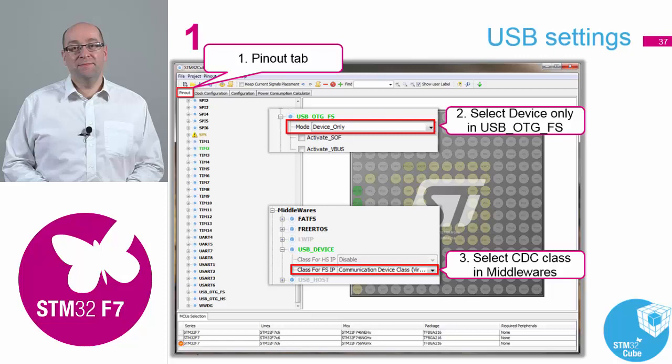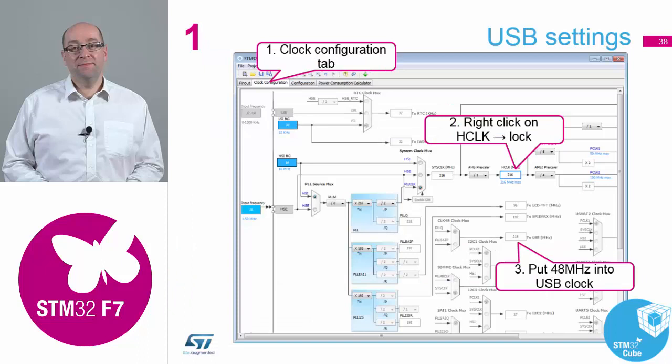It's under the USB device. The host option should be grayed out because you've only assigned device. So once we've configured the USB, we now need to check to make sure our clock source is correct for USB. If you go back to your clock configuration tab and find USB here, it's probably set at a very strange frequency, not 48 megahertz.